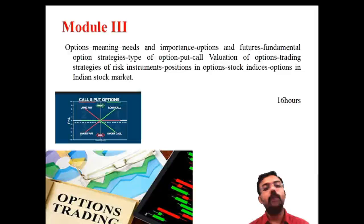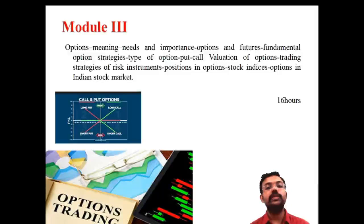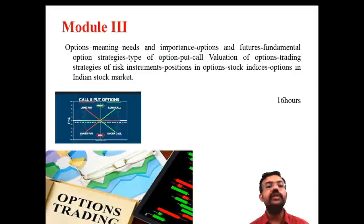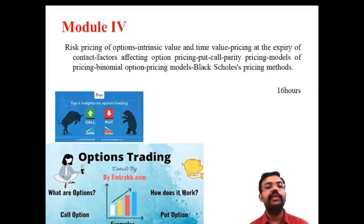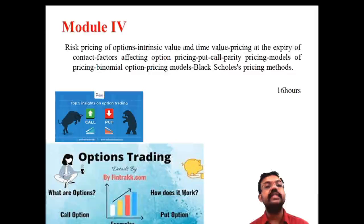The third module is the option, with 16 hours of lectures. We discuss the meaning, need, and importance of options, with two important categories: put options (right to sell) and call options (right to buy), as well as strategies using option models. The fourth module is also part of options, discussing the binomial distribution model and the Black-Scholes model, time value and intrinsic value of options — 16 hours covering strategies for options.